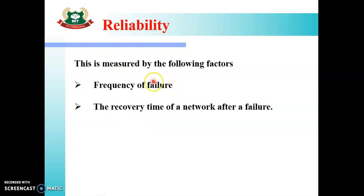The second factor is Reliability. We can measure reliability by two factors. Reliability means trust — can we trust our communication or transmission system when sending information from source to destination? The first is frequency of failure: if the frequency of data transmission failure is high, it means the network is not reliable and our data is getting lost in between. If the frequency of failure is low, then we consider this network to be reliable.